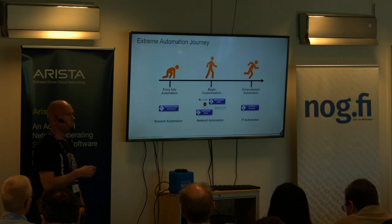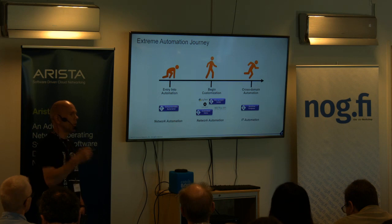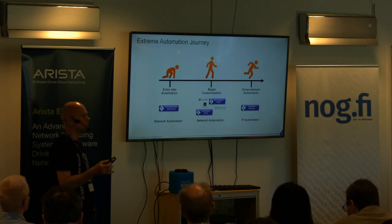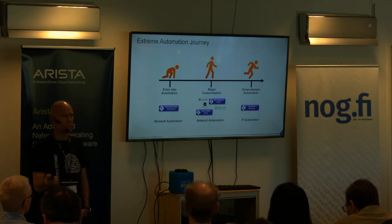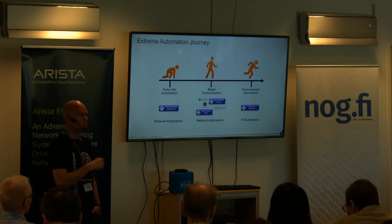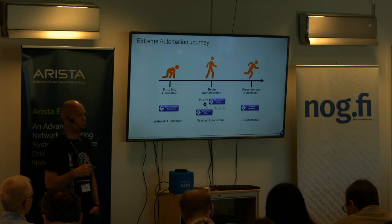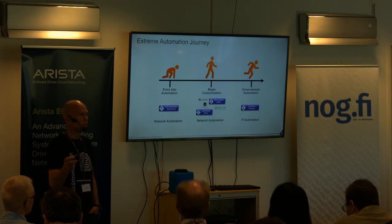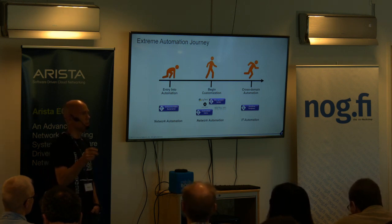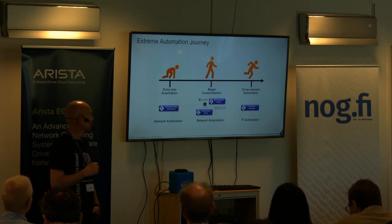If something happens in your network, you might want to send a chat message like Slack to your NOC team to notify them. At the same time you might actually want to open a trouble ticket in Jira — basically have an application responding to a given event. This is event-driven automation, which I'm going to talk about.